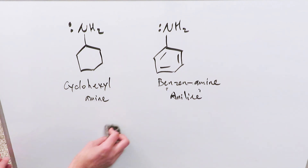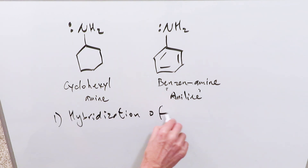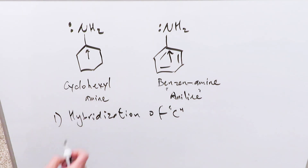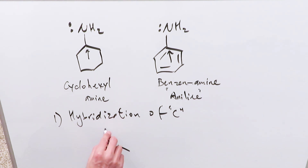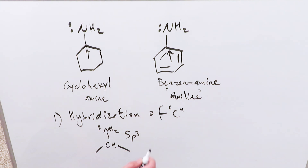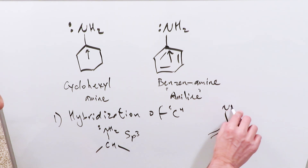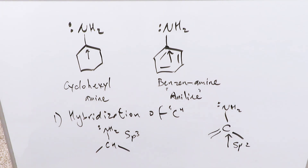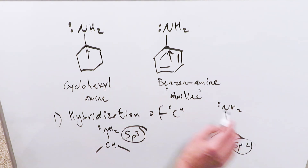Back to the question — which of these is more basic, cyclohexylamine or benzeneamine? You can look at it in two ways. Number one: the hybridization of the carbon attached to the nitrogen. In cyclohexylamine, you have a CH with an NH₂ group and two lone pairs — this carbon is sp3 hybridized, everything is a single sigma bond. In benzeneamine, you have a double bond at this carbon, so it is sp2 hybridized because a pi bond is coming into play.